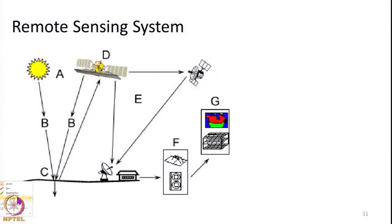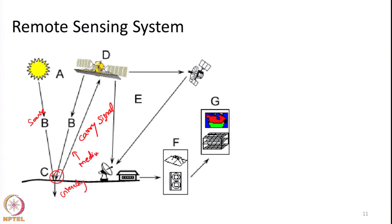In the last lecture, while I discussed about the remote sensing system, I told you about some medium that carries the signal that we need. Whatever the source of energy is giving will be interacting with the object of interest, and then this particular energy will carry the signal that we need. This signal will contain useful information about the object of interest, which we will record in the sensor and then use for various applications. In the last lecture I termed it as medium.